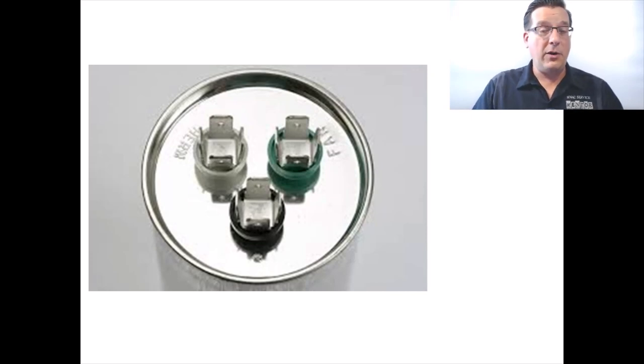Here's an example of a dual run capacitor with the C terminal in black at the bottom, the fan terminal in green on the right, and the HERM terminal in white on the left. So just imagine that from here to here is the five microfarad capacitor, and from here to here is the 35 microfarad capacitor. And of course, dual run capacitors come in all different sizes and values. 35-5, 25-5, five is real common, sometimes seven and a half, right? 55-7 and a half, 85-5, all types of different values. But what we're talking about is one device that actually has two devices inside of it.